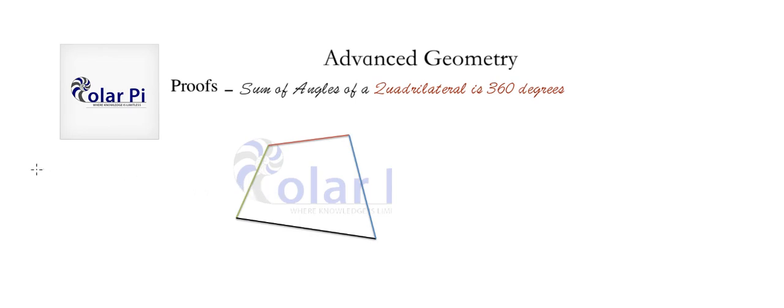Now, if we label the angles, the four angles, starting with this one being alpha and then beta here, and then theta here, and then delta here, then what we want to show is this, which is we want to show that alpha plus beta plus theta plus delta is equal to 360 degrees.